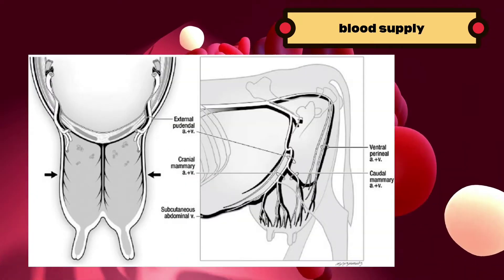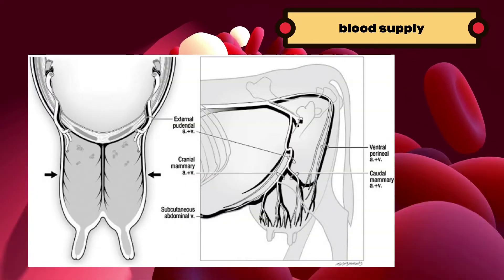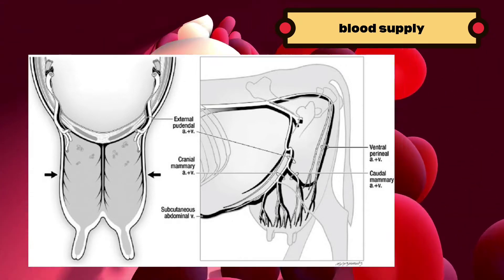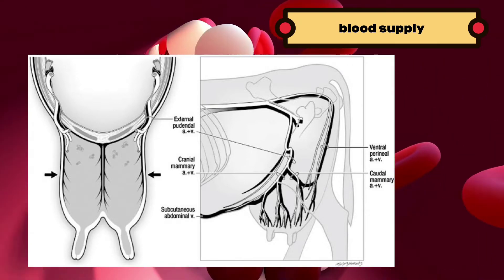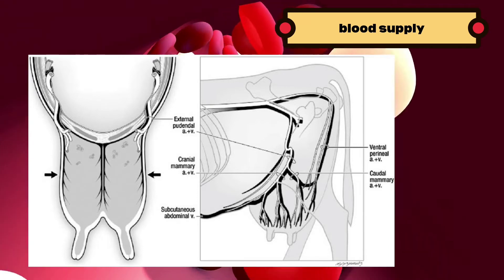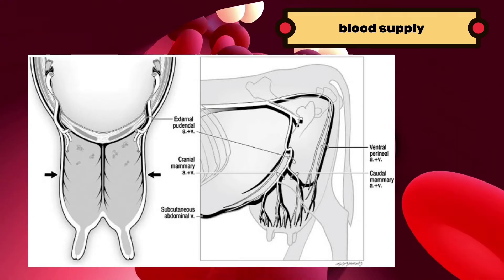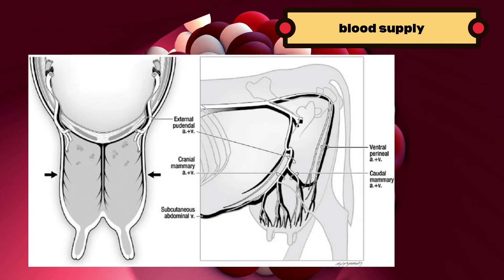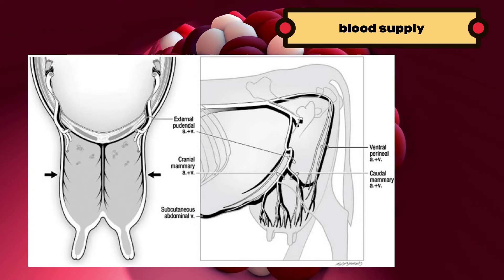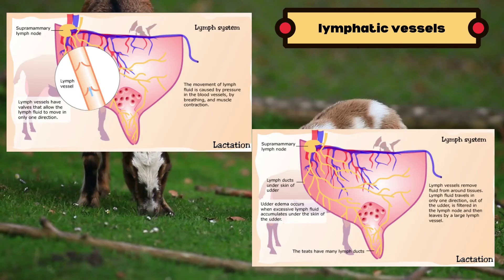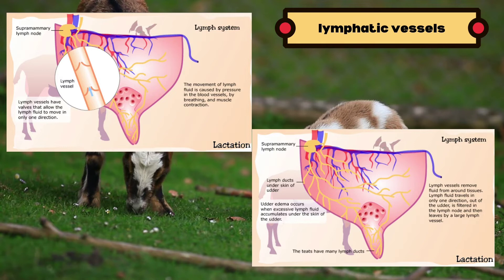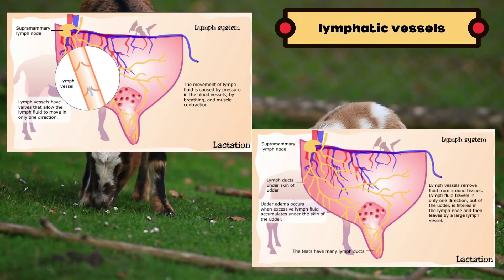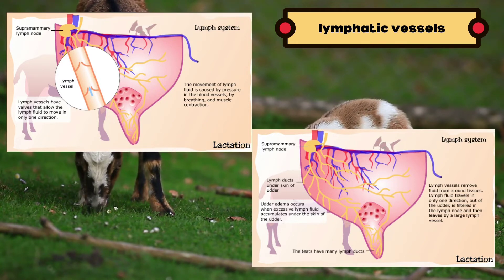Next is the blood supply. The blood supply to the mammary gland is extremely important for mammary function. All of the milk precursors come from blood. To produce one liter of milk, 500 liters of blood have to pass through the udder. Then the lymphatic vessels provide lymphatic drainage, which plays a significant role in the pathology and treatment of breast cancer.